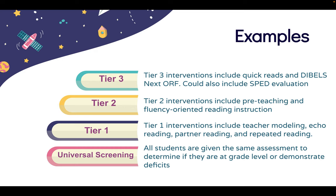Tier two strategies might include pre-teaching, which is reviewing the passage and identifying important vocabulary terms before reading the actual text itself, and is typically done in a small group instruction setting. It might also include fluency-oriented reading instruction, which entails many of the same strategies from tier one — like teacher modeling and repeated reading — however, done in a more extensive manner, perhaps two to three times a week.